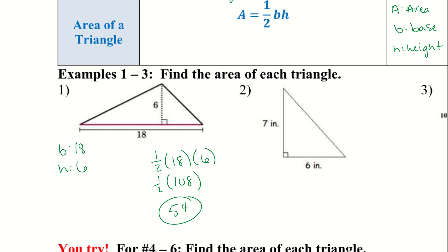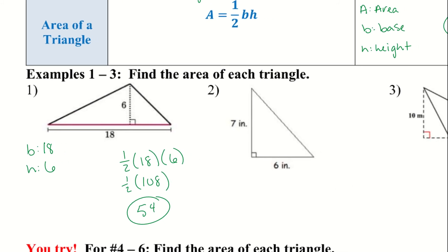You can plug it all straight into the calculator as you see it, or do it in your head. For number 2, the base is 6 and the height is 7. So we have one-half times the base times the height. Multiplying everything together, we end up with 21.